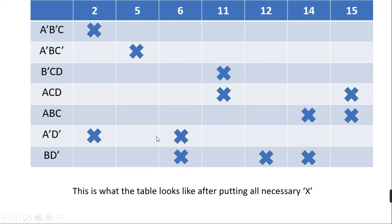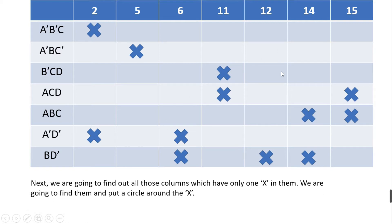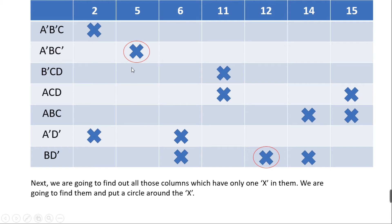After placing all the necessary X marks, the table is complete. Now we look for columns that have only one X in them and circle those X's. In this problem, columns 5 and 12 each have only one X, so we put a circle around those X's.